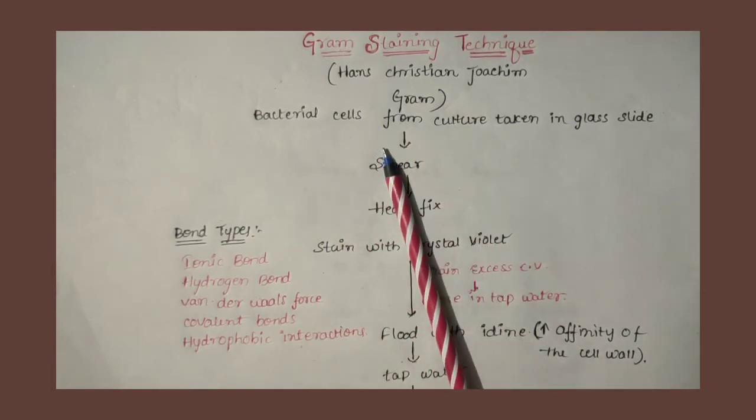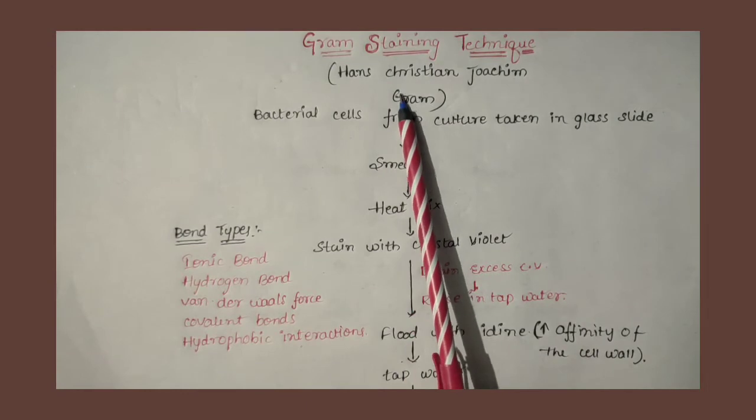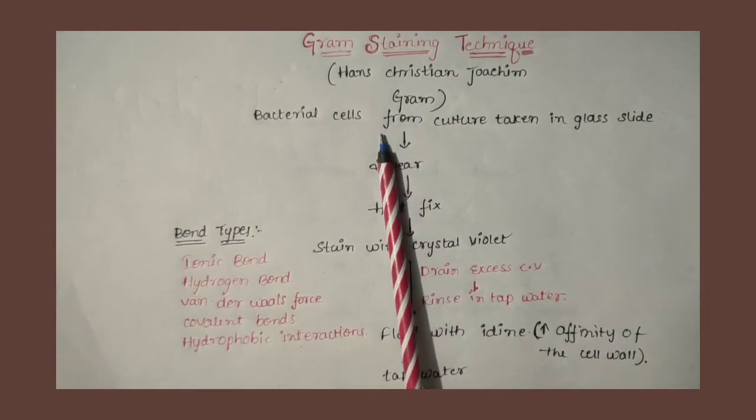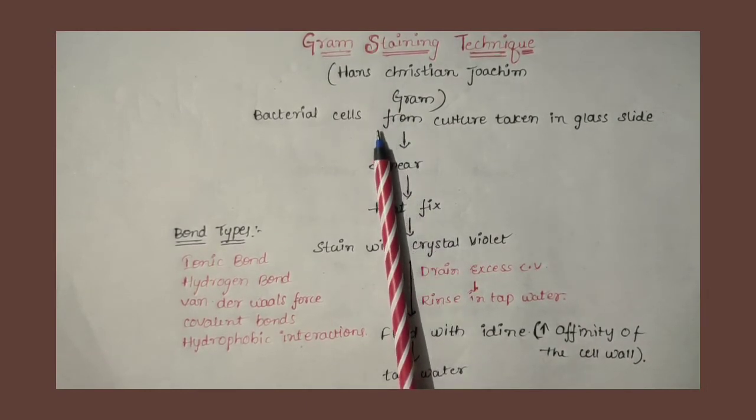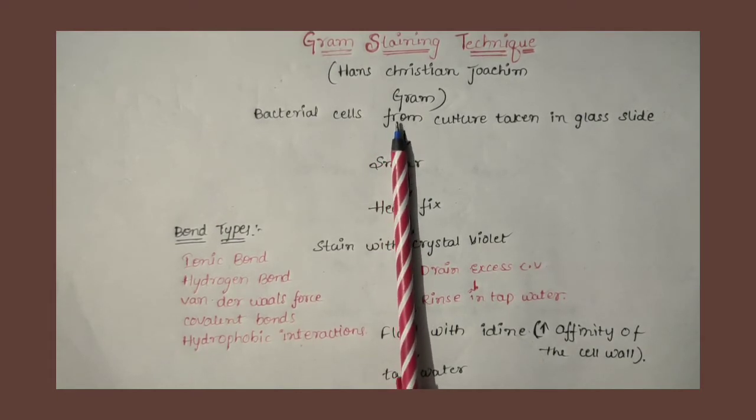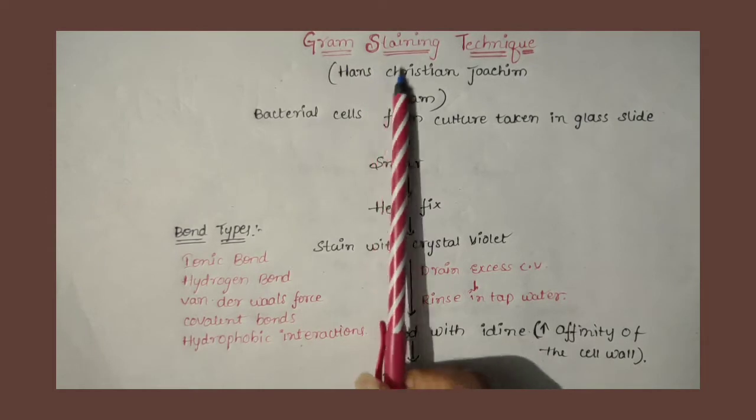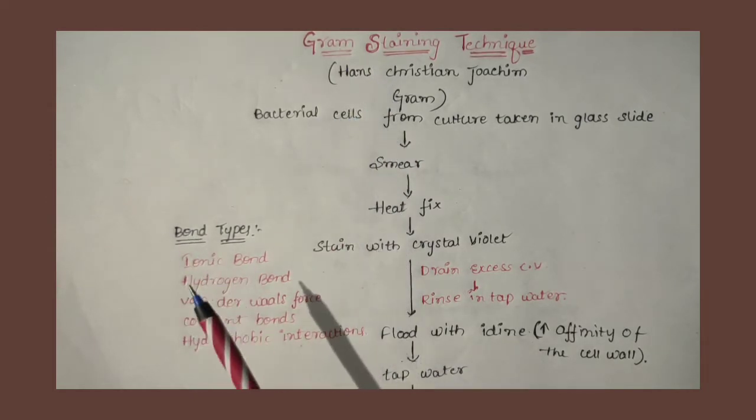This is the staining process. For example, plant sectioning, leaf, onion sectioning. We will do the staining process. We will see how a cell or stain will react to the color.